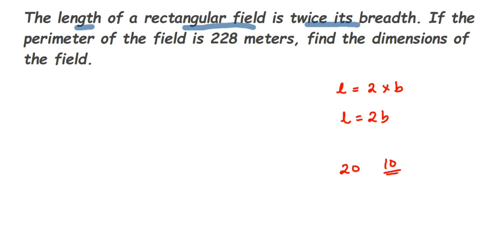Now we have to find out the dimensions here. We have to find out the value of length and breadth. They have given one more relationship: the perimeter of the rectangular field is 228. So we have to use this perimeter and the relationship between length and breadth to get the dimensions.